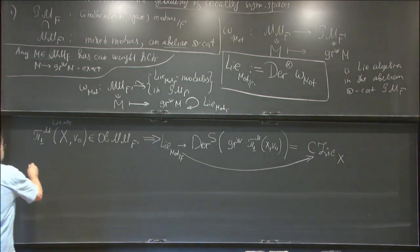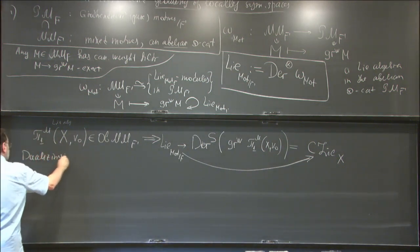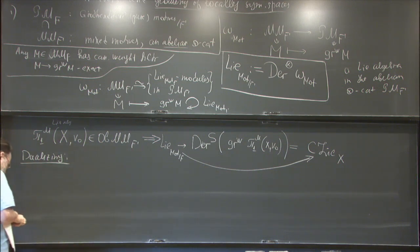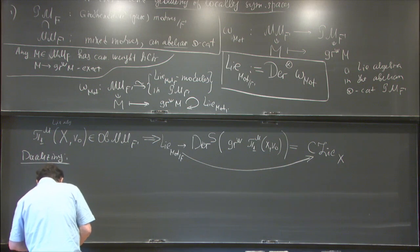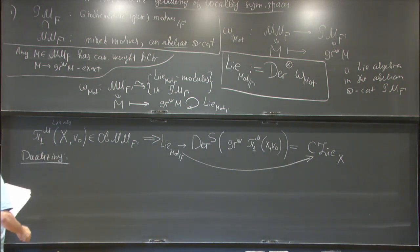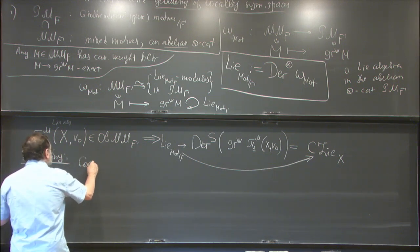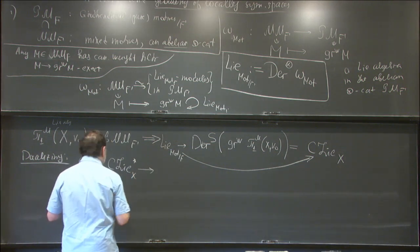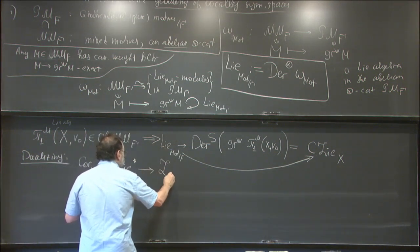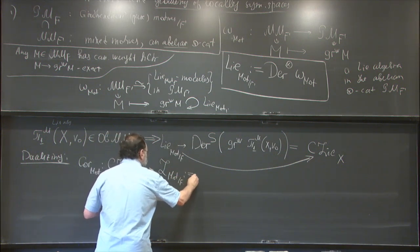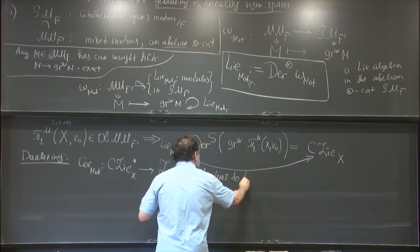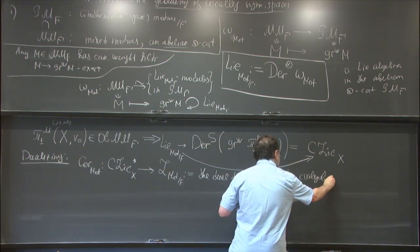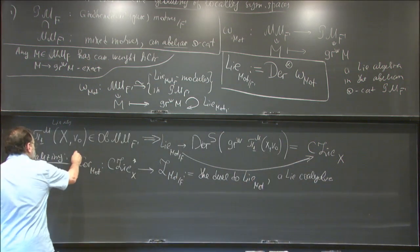Now let's dualize this map. If you formally dualize it, you get the motivic correlator map — a map from the dual of the cyclic space to the dual of this Lie algebra, which I denote L^mot(F). This is by definition the dual to the motivic Lie algebra, and a Lie co-algebra in the category we're working in. So we've obtained this basic object of study.